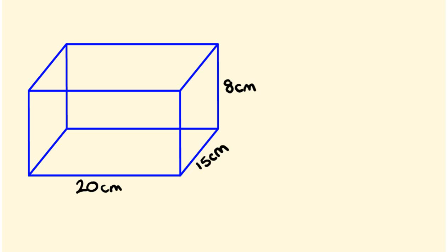G'day and welcome to the TechMath channel. What we're going to be having a look at in this video is how to work out volume. The volume of a solid object is about three-dimensional objects — they have a length, a width, and a depth — and basically the volume of a solid is the amount of space that solid occupies.